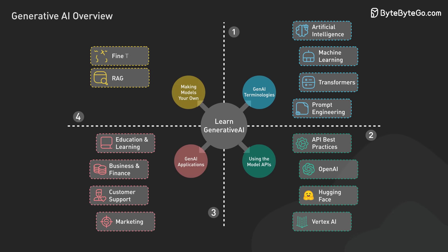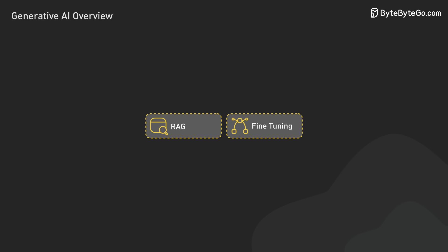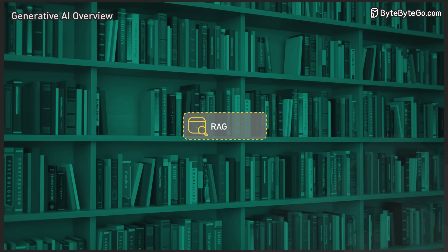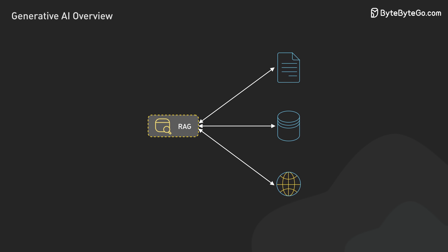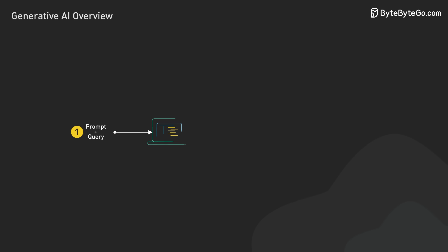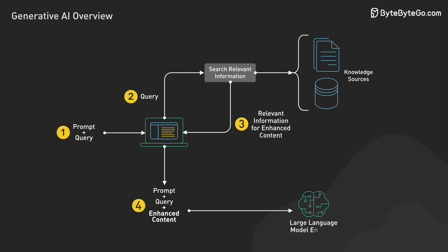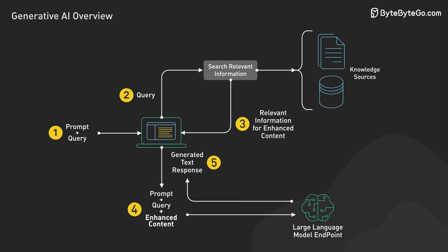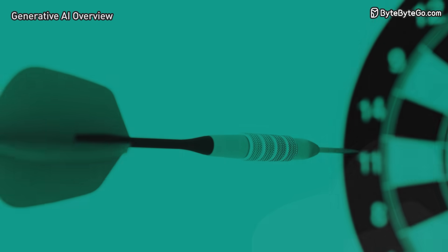Now let's talk about making AI models your own — having a model that's smart about your specific needs. There are two main techniques: Retrieval Augmented Generation, or RAG, and fine-tuning. RAG is like giving your AI model a personalized library. It allows your model to access external information sources — your databases, documents, even the internet — in real time, so it can pull in the most up-to-date and relevant information to answer queries specific to your business. When a user asks a question, the system first searches its external sources for relevant information, feeds this to the AI model along with the question, and the model crafts an answer using both the retrieved information and its own knowledge. The beauty of RAG is that it combines the strengths of information retrieval and language generation, leading to more accurate and relevant responses, especially for complex questions that require synthesizing information from multiple sources.